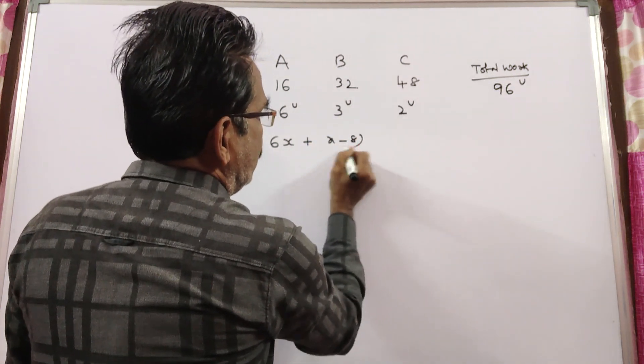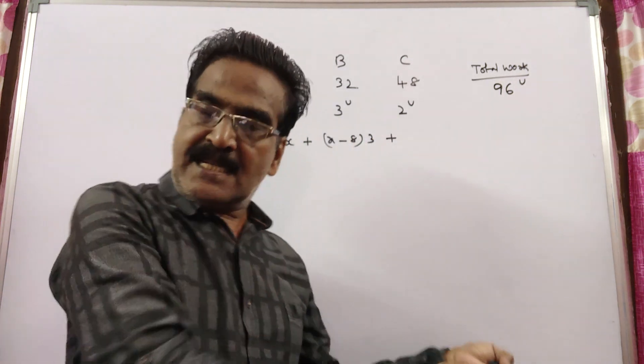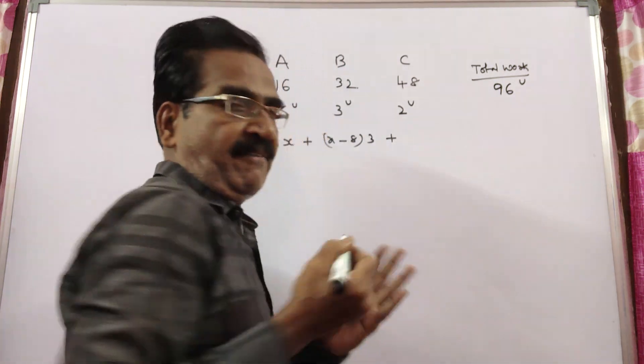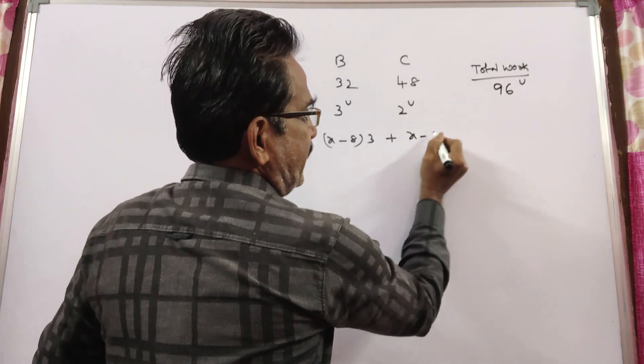X minus 8 into 3 plus C left 6 days before the completion of the work. So, C worked for X minus 6 days.